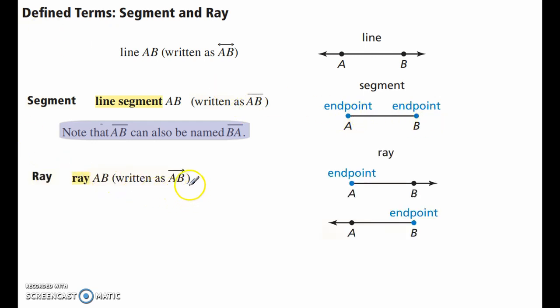With a ray, we begin at an end point and then we go through another point. So this is ray AB going in this direction. Now note here that it matters which way you write this, because if you write the B first, that means that's the end point. So, ray AB is different from ray BA, pay attention to that.